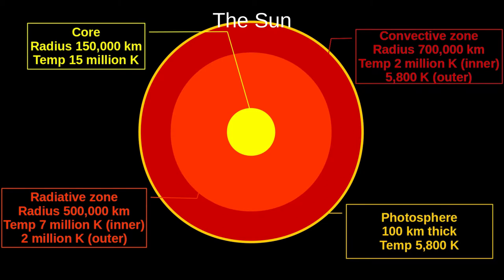This is the part of the Sun that we can see. The rest of this diagram is to scale, but the photosphere is so thin, at only 100 kilometres, that I've made it large enough to see on this picture. The photosphere of our Sun is 5,800 Kelvin, which gives it a white-hot colour. Of course, we see it as yellow, but that's because our atmosphere scatters the blue light across the whole sky.